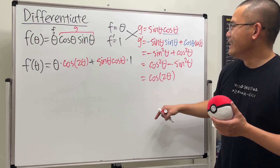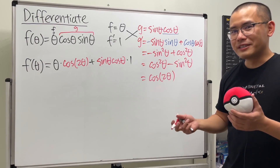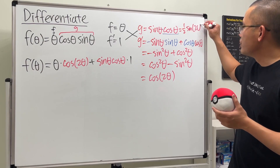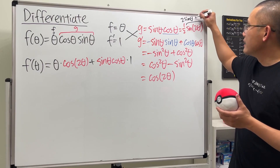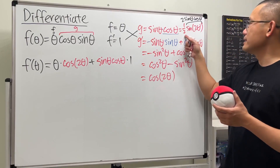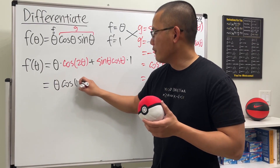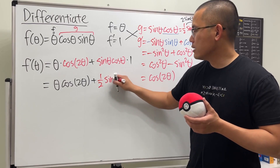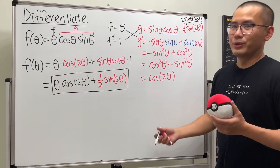Notice that sine theta cosine theta is almost the double angle identity for sine. Since sine of 2 theta equals 2 sine theta cosine theta, we have sine theta cosine theta equals one half sine of 2 theta. So the final answer is theta times cosine of 2 theta plus one half sine of 2 theta.